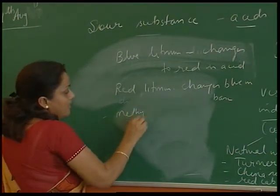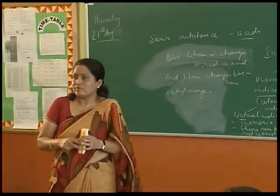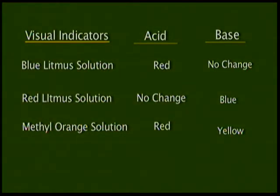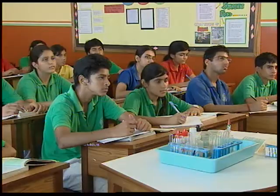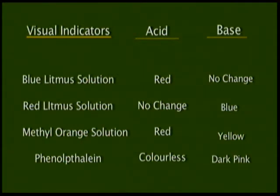Methyl orange — as the name suggests — is orange in color. It changes to red in acids and yellow in a base. Then phenolphthalein: phenolphthalein is a colorless indicator which stays colorless in an acid, but in the case of a base, it becomes dark pink or magenta.